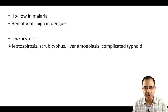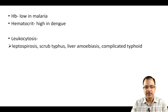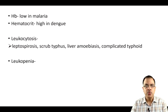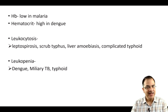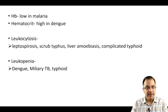Remember: typhoid causes low TLC, but if there is a complication like intestinal perforation, then TLC will be increased. Leukopenia — TLC less than 4000 per microliter — is seen in cases of dengue (viral-induced fever), malaria, amoebic liver abscess, TB, and typhoid fever.